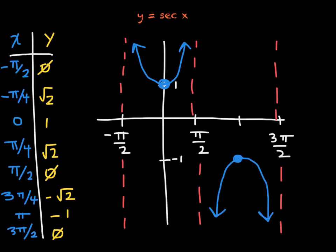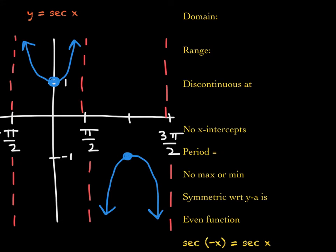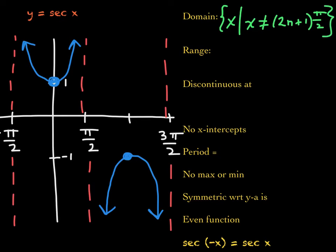Let's write some observations — the properties and characteristics of the graph of the secant function. The domain is the set of all x such that x is not an odd multiple of pi over 2. The range is anything less than or equal to negative 1, union anything greater than or equal to positive 1. You can look at the picture to confirm this as well.